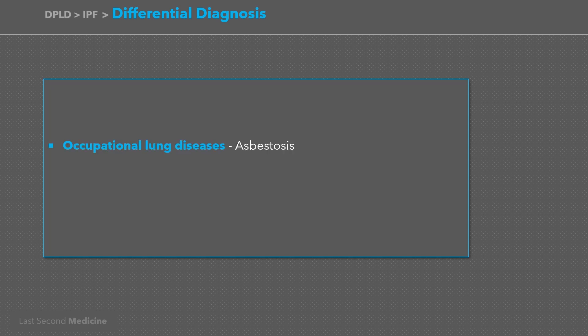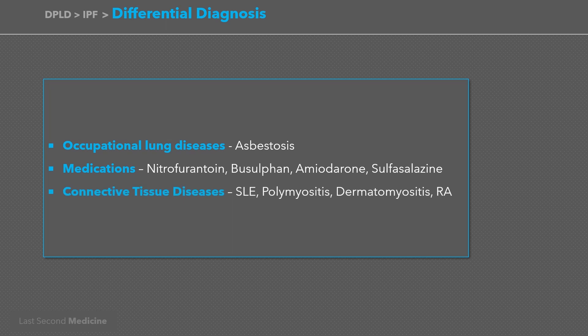When encountering a patient with dry cough and progressive shortness of breath with features of pulmonary fibrosis on radiographs, the differential diagnoses to consider include occupational lung diseases like asbestosis; use of medications like nitrofurantoin, busulfan, amiodarone, and sulfasalazine; and connective tissue diseases like SLE, polymyositis, dermatomyositis, and rheumatoid arthritis.